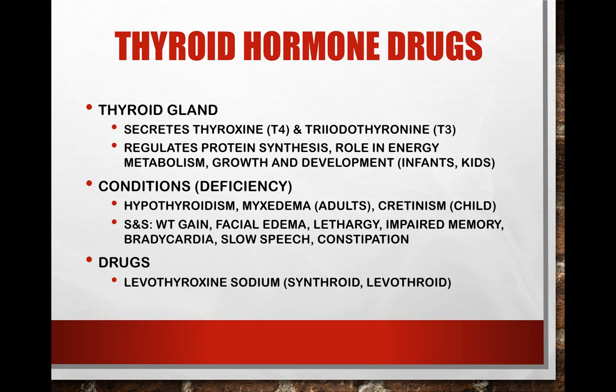Let's review thyroid hormone drugs. The thyroid gland excretes two different hormones: T4 (thyroxine) and T3 (triiodothyronine). These hormones have a vital role in regulating protein synthesis, our body's metabolism, and growth and development in a developing child. It is possible to have too much or too little thyroid hormone. Too much is hyperthyroidism, and too little is hypothyroidism. That deficiency is much more common than the overproduction.